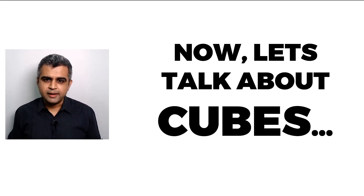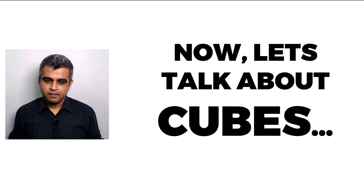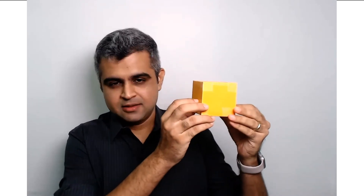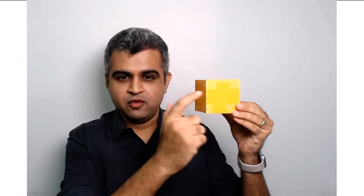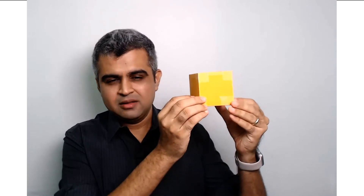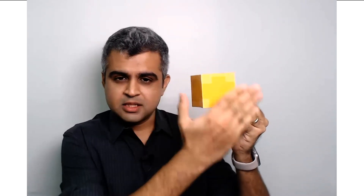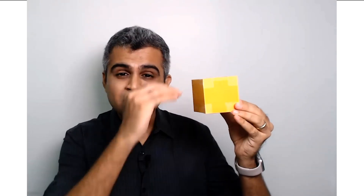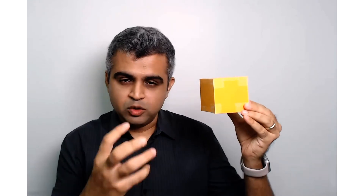Before discussing mitochondria further, let's briefly talk about cubes. A cube has six sides — a floor, a roof, and four sides — and each side is a square. The surface area is length times breadth times six. The volume is length times breadth times height. The surface area is the total exterior surface, while the volume is the amount of space inside the cube.